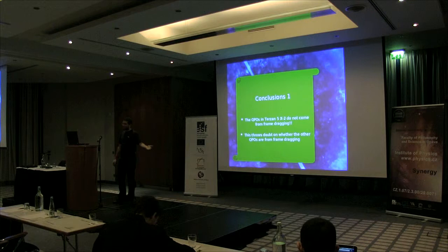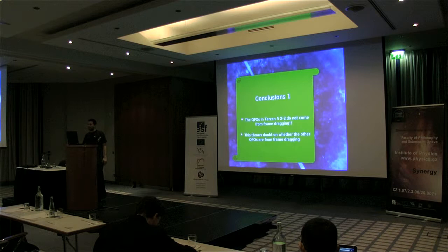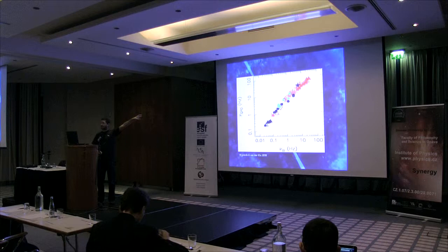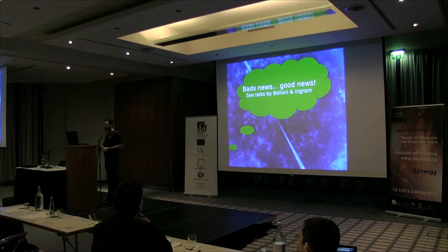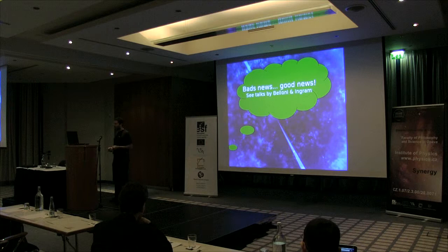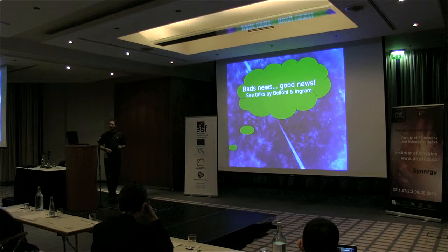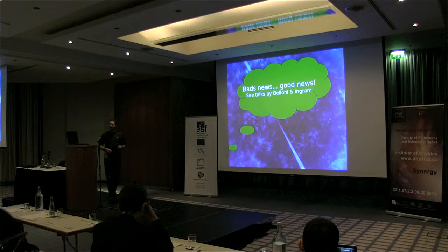So there is now doubt about whether the QPOs we see in other neutron stars — and by extension in black holes — are produced by Lense-Thirring precession, since it is all based on the same type of correlations. To conclude: I gave you some bad news, but not everything is bad. Tomorrow Tomas will talk about black holes where they think they have identified Lense-Thirring precession, and I also invite you to see Adam Ingram's talk on his model. Thank you.